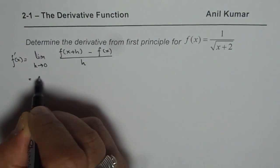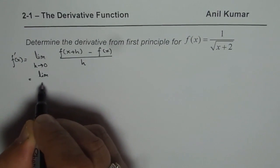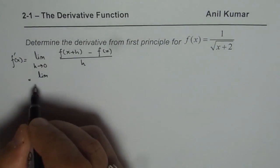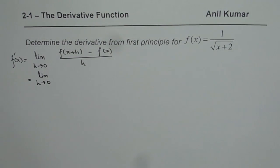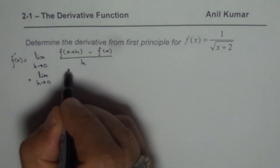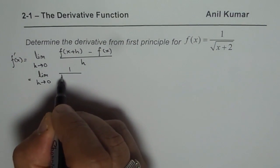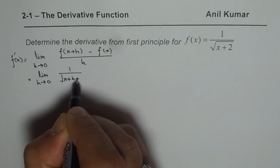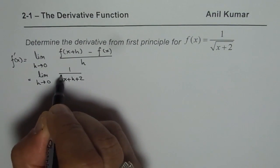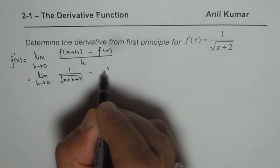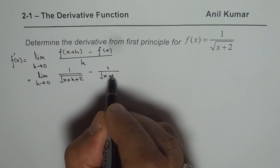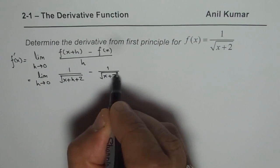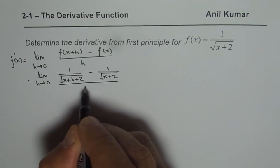Now let us substitute x plus h for x. We get 1 over square root of x plus h plus 2 minus 1 over square root of x plus 2, all divided by h.